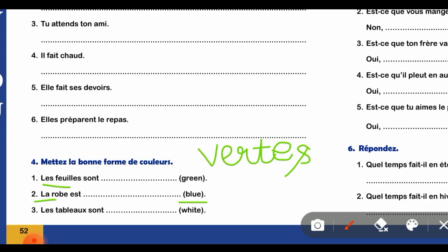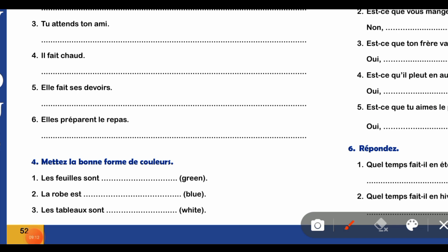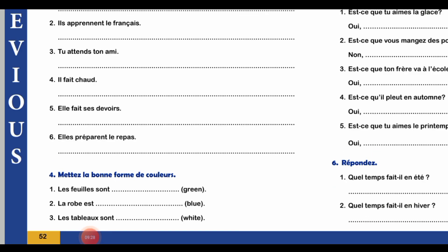The second part is 'la robe à dash blue'. Blue को French में 'bleu' लिखते हैं। Dress feminine है जैसा 'la' से पता चलता है, तो E भी add कर देंगे। Part number 3 - 'les tableaux' blackboard है, तो white, जिसे 'blanc' बोलते हैं। 'Tableaux' plural है इसलिए पीछे S add कर देंगे।